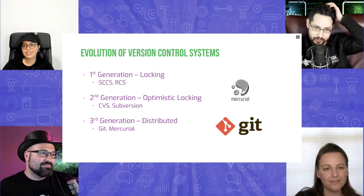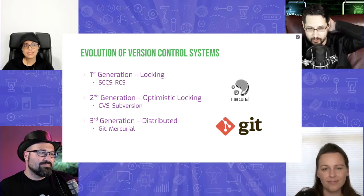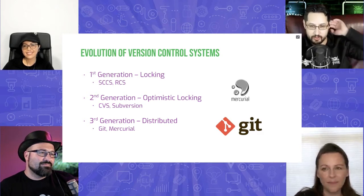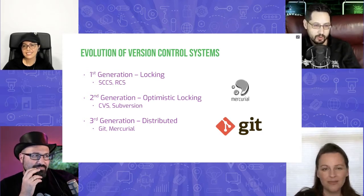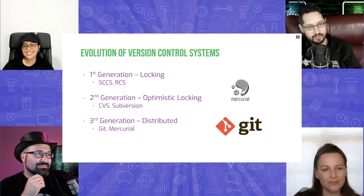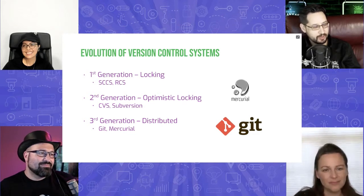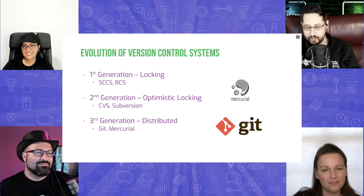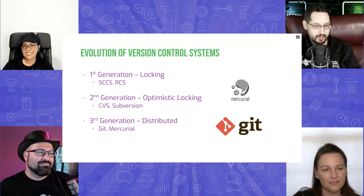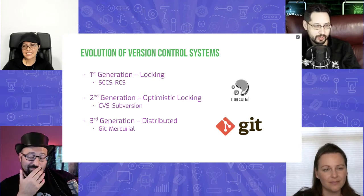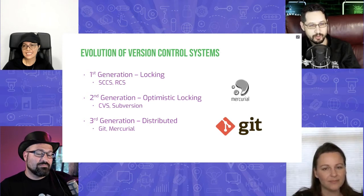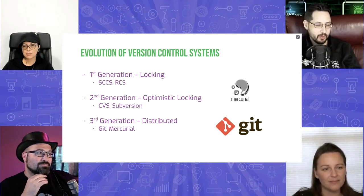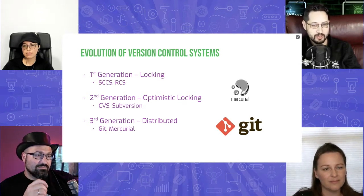CVS and Subversion fixed this with optimistic locking — letting everybody change the files whenever they want. If two people change the same file, you go back and resolve a merge conflict, automatically if possible, manually if not. This takes us to the third generation: CVS and Subversion synced with a server, while Git and Mercurial introduced distributed version control where you sync with a local repository — you have your own full copy of the entire repository locally.